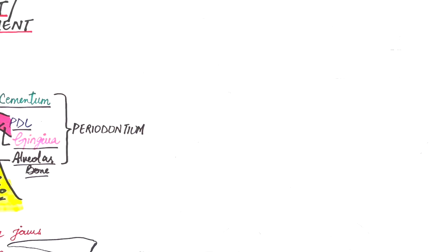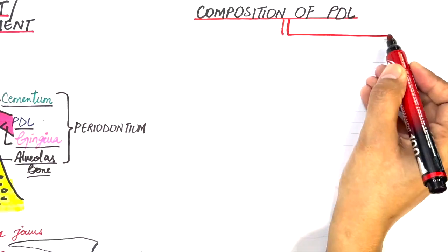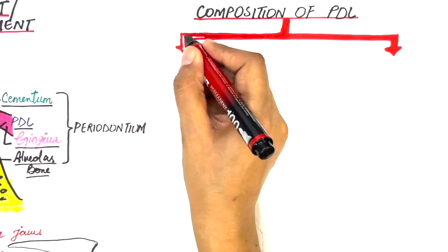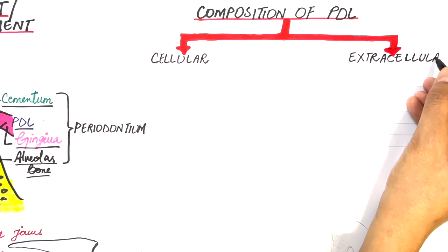Let's look at the components of the periodontal ligament. The PDL is a multifunctional unit of connective tissue that contains cellular and extracellular components.